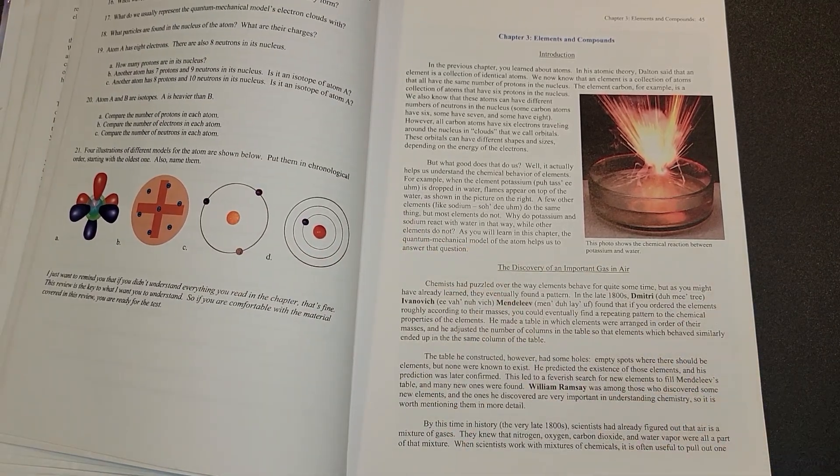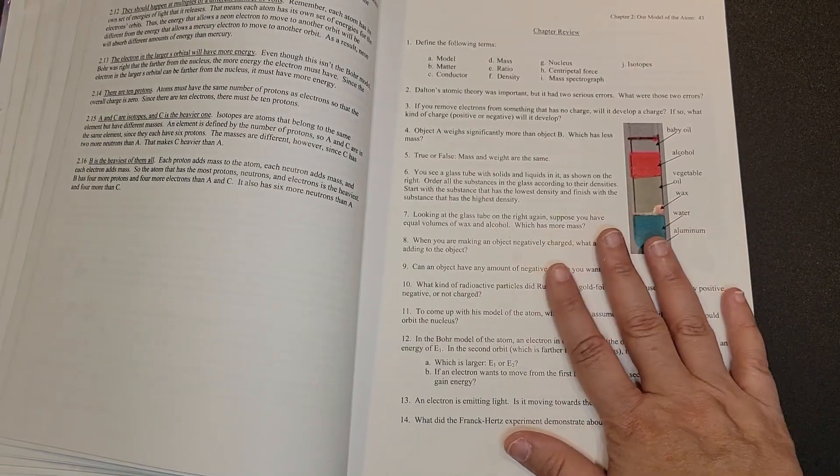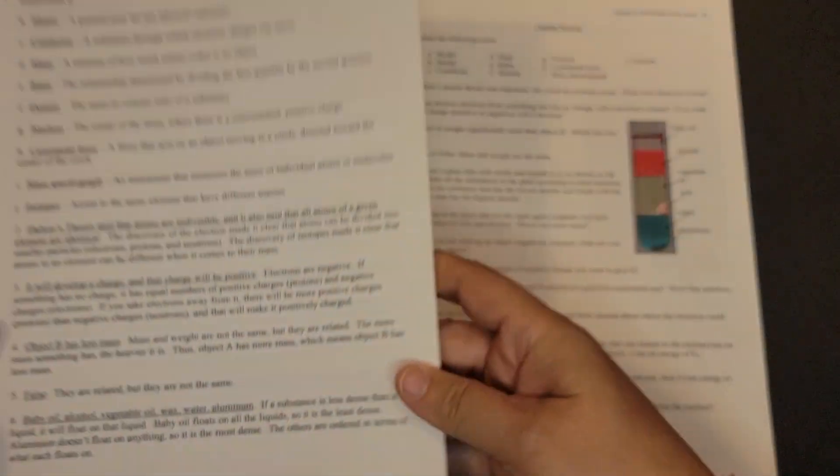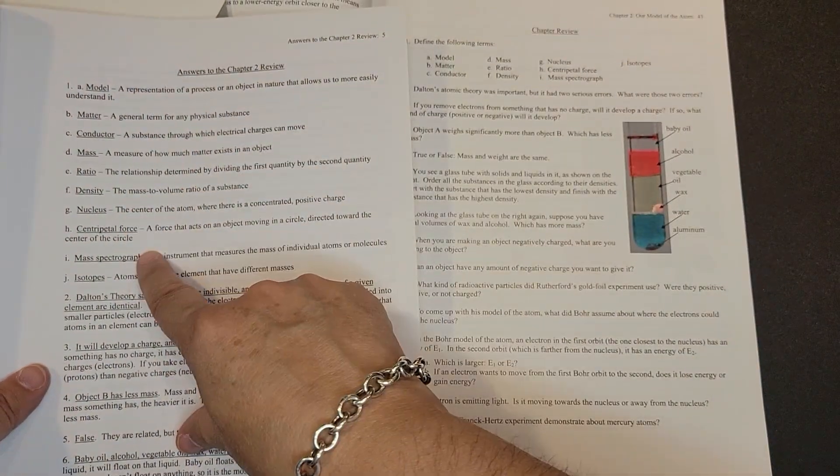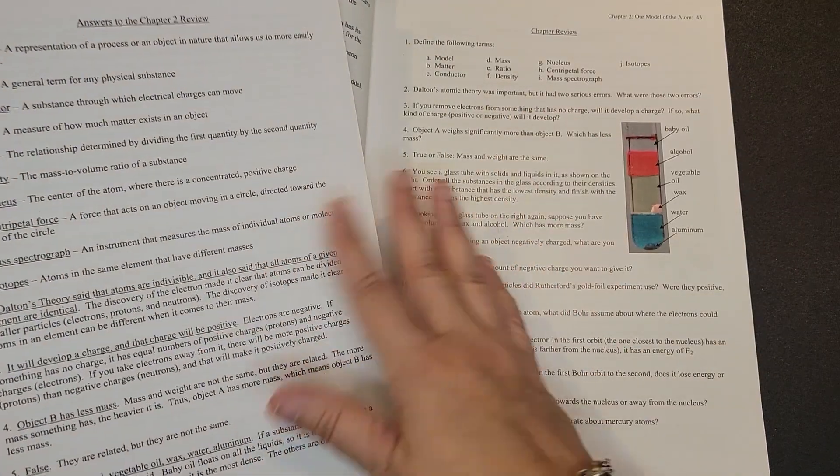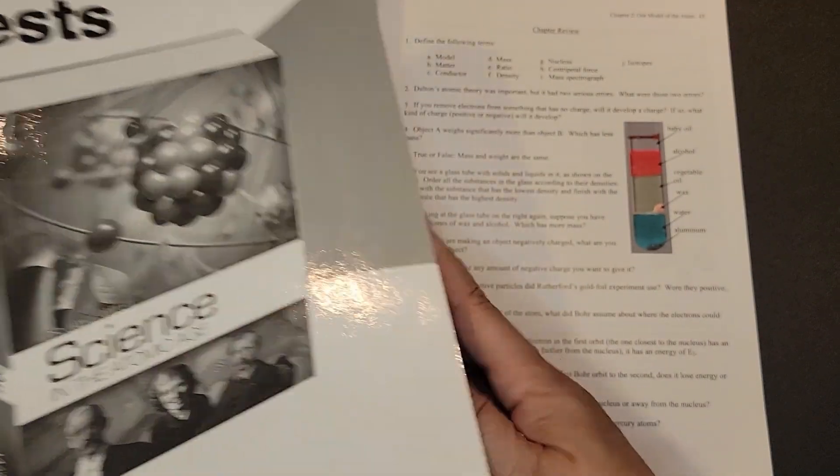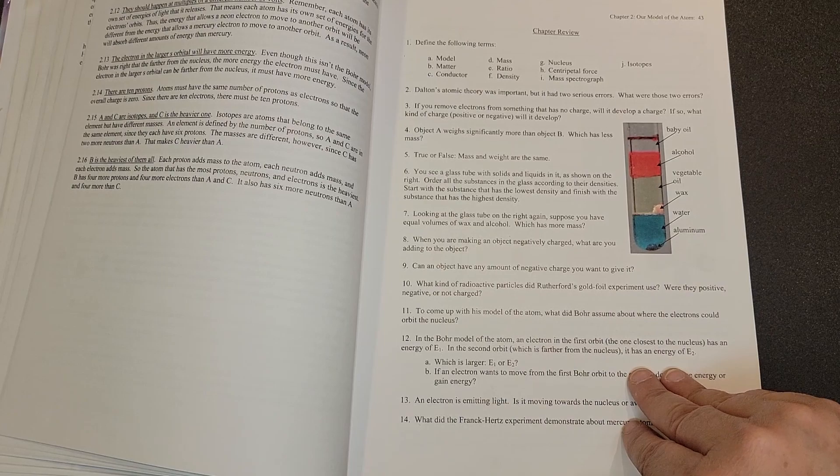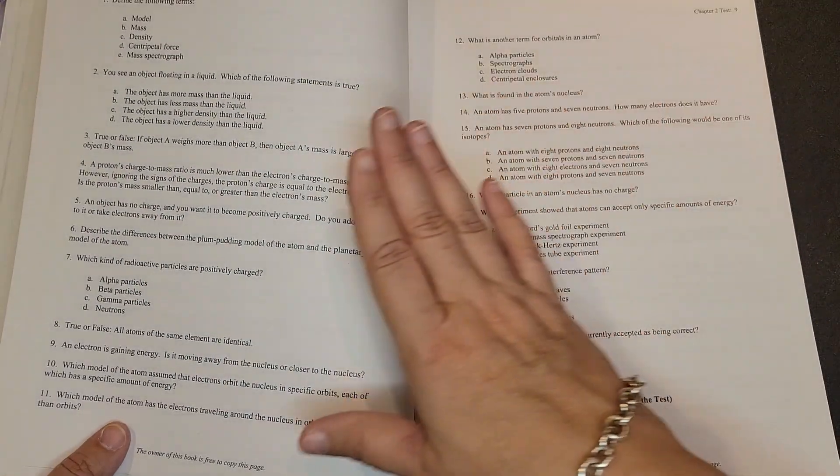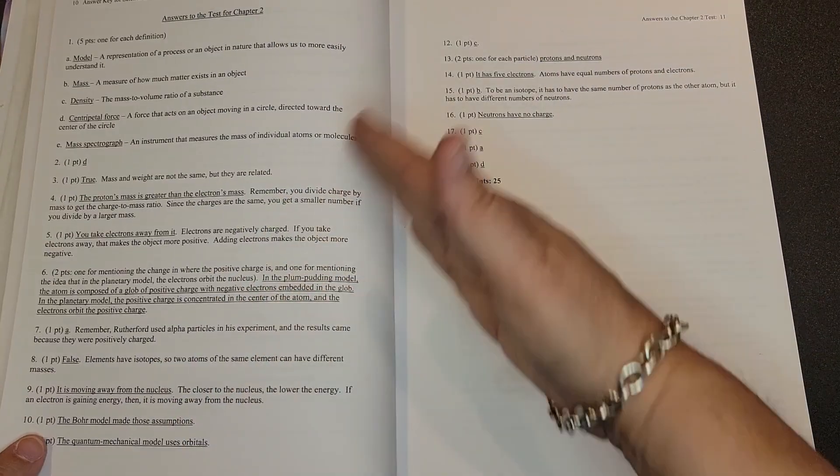And then you move on to the next chapter. This chapter review is really what they want you to understand, what they want you to take away from the chapter. The answers for this chapter review will be in your answer key and test. You can see you have define the following terms, and then here are the definitions for those. So for these questions, you do have to look in the answer key and test for the answers to them. And then once you are finished with this chapter review, you should be ready to take the test for Chapter 2. So here is your test for Chapter 2, and then you can see that your answers are on the next page after your test.